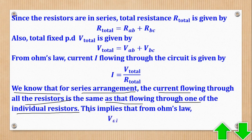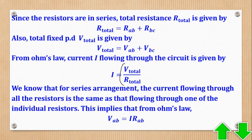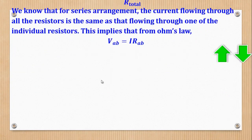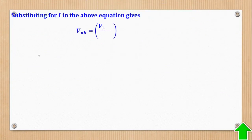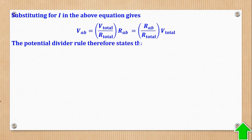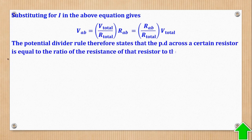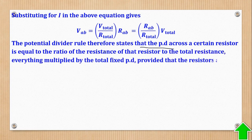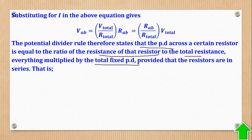From Ohm's law, the current flowing through RAB gives VAB equal to I times RAB. Since I is already known as V total over total resistance, substituting for I and rearranging gives the potential divider rule. It states that the PD across a certain resistor equals the ratio of that resistor's resistance to the total resistance, everything multiplied by the total fixed PD, provided that the resistors are in series.